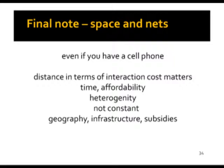A note on the spatial relationship to social networks: distance really matters. It's not that the world is flat, as some people are saying. Distance is not just simple geographical or Euclidean distance — it's distance in terms of time and affordability to interact with another person, and it's not just continuous. In the case of the mountains, there's a huge difference between accessing people at the edge of the hill and people below. Distance also depends on infrastructure — for example, if there is a regular, very cheap bus going to the city, it's much easier to make contacts outside.